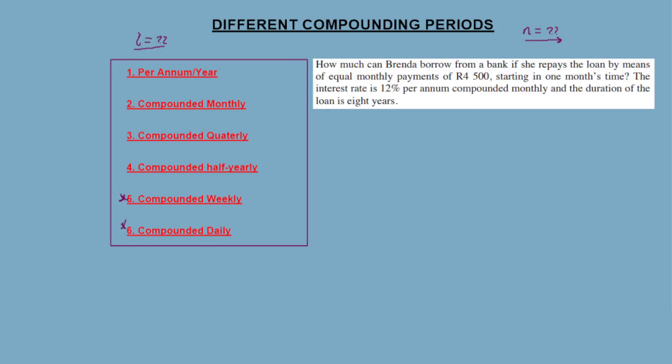I've started an example just to demonstrate the different compounding periods. This is an example of present value because there's a loan involved.